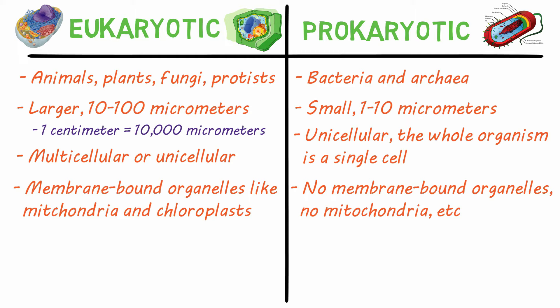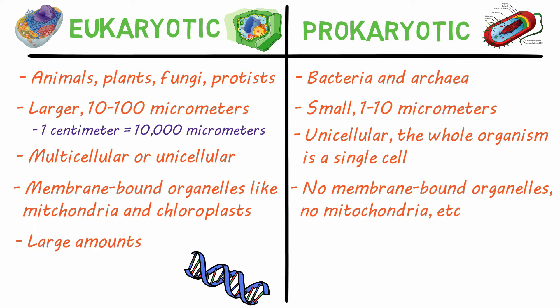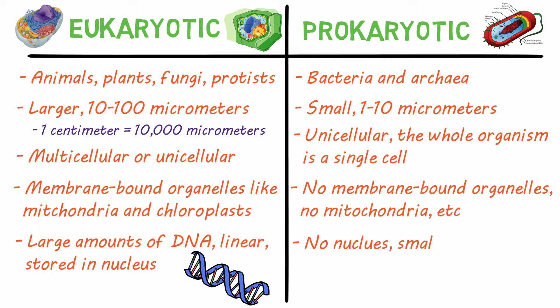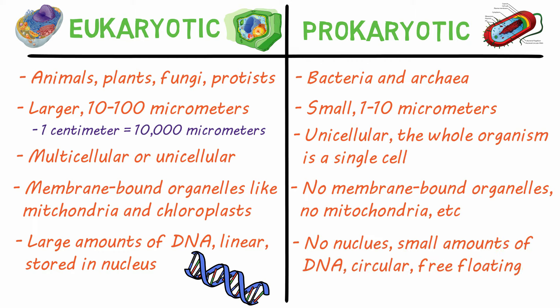The final difference I'll highlight is in their genetic information. Eukaryotes have large amounts of DNA that is linear and stored in the nucleus. Prokaryotes have no nucleus, just small amounts of circular DNA that's freely floating in the cell.